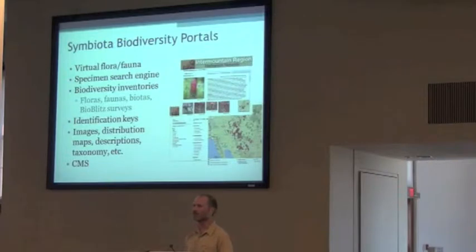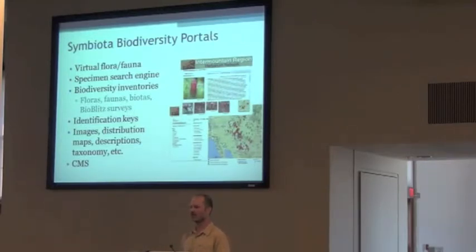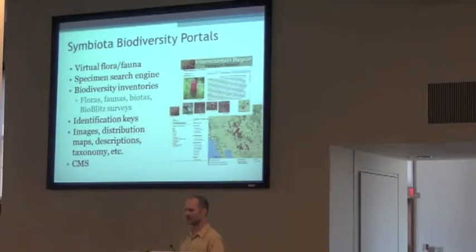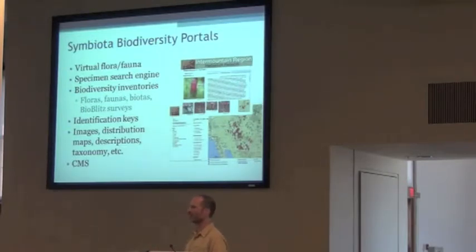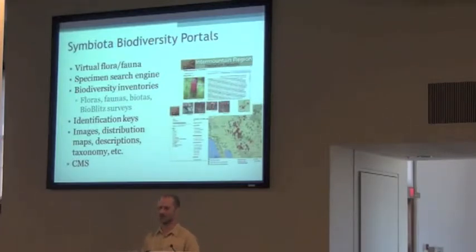There are three different modules or features available. One is the specimen module, which allows you to search and manage specimens. Then there's the biodiversity inventory module for doing a species list of certain areas — floras, faunas, bioblitz, along those lines. And then there's an interactive identification key module. All of these can be installed separately, turned on or off, but they work best when they're all turned on and working together. Through this presentation, I'll show you most of these features.